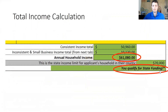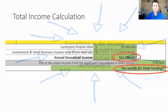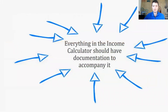When all sources of income have been recorded, return to the consistent income tab for a grand total calculation at the bottom. In this example, the applicant had a little over $50,000 in consistent income, a little over $10,000 in inconsistent income, and a total income of $61,080. Based on their county and household size, they income qualify for an IDA. Everything in the income calculator should have documentation to accompany it, because calculations are based on documentation and reviewers will verify your calculations.